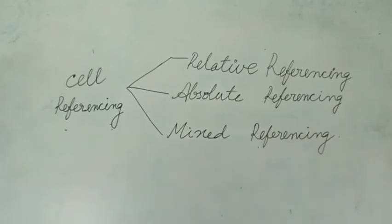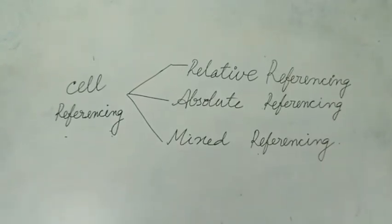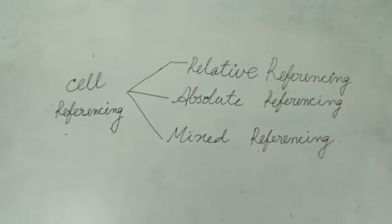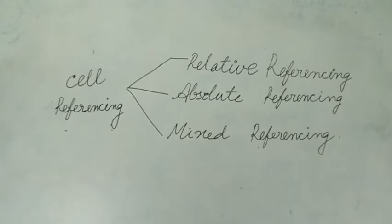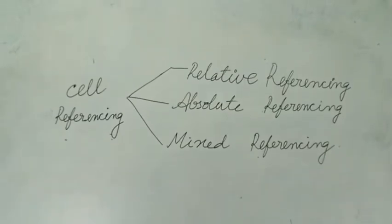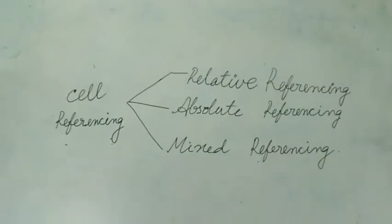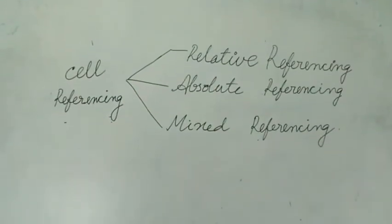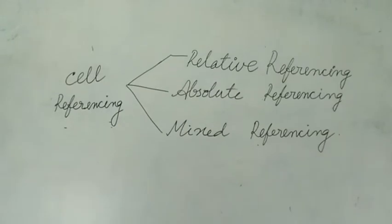In Relative Referencing, when the formula is copied to a new cell, the corresponding cell address changes with reference to the new cell address. For example, if you write a SUM formula in one cell and drag it, the answer will automatically appear in the next cells.